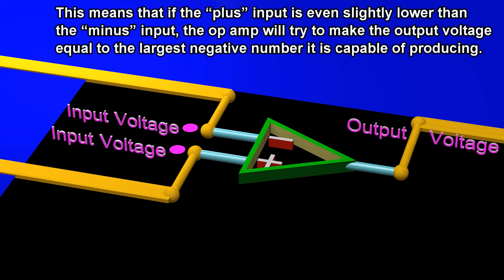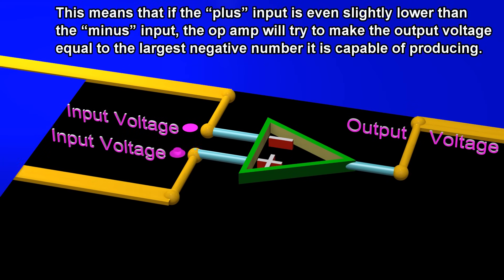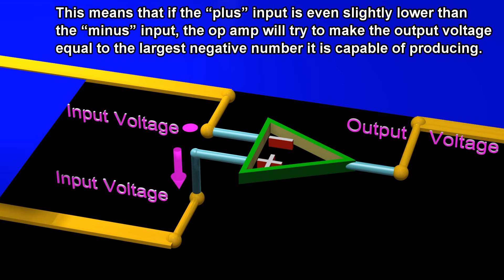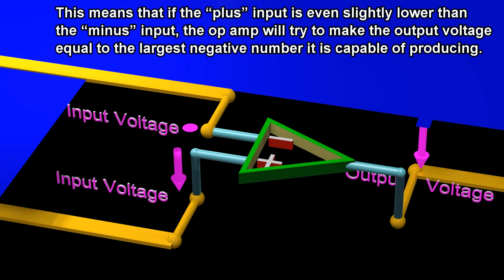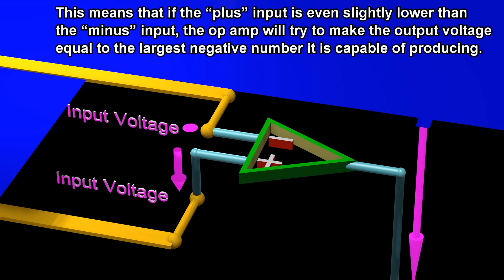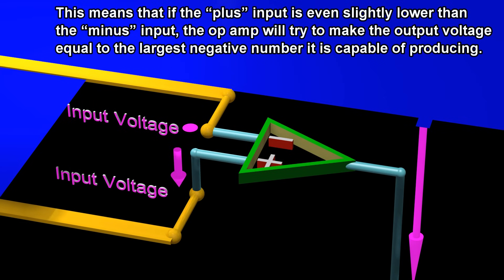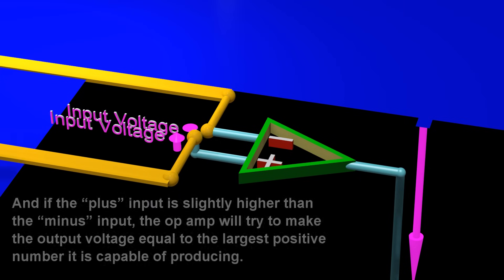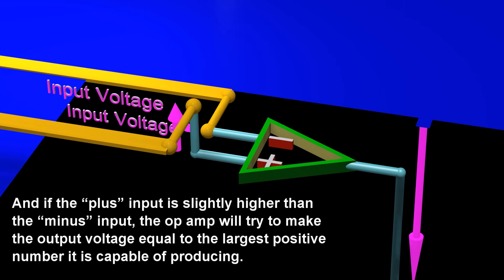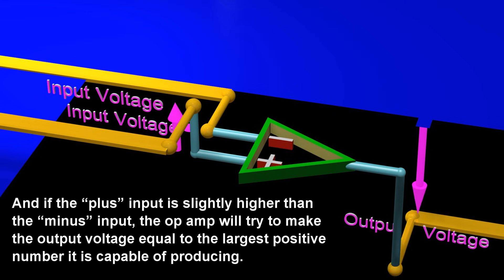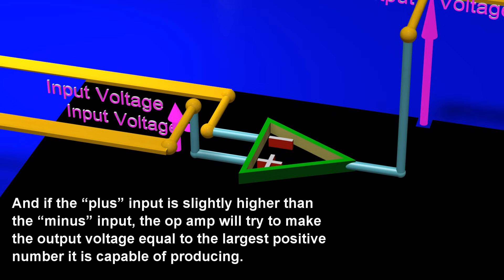This means that if the plus input is even slightly lower than the minus input, the op-amp will try to make the output voltage equal to the largest negative number it is capable of producing. And if the plus input is slightly higher than the minus input, the op-amp will try to make the output voltage equal to the largest positive number it is capable of producing.